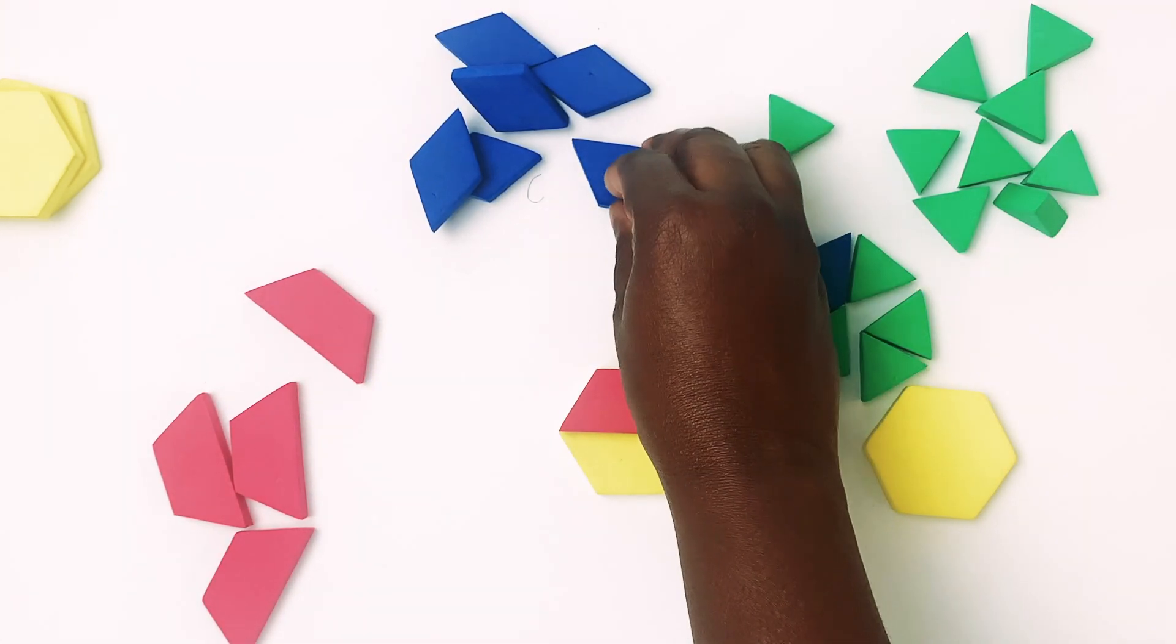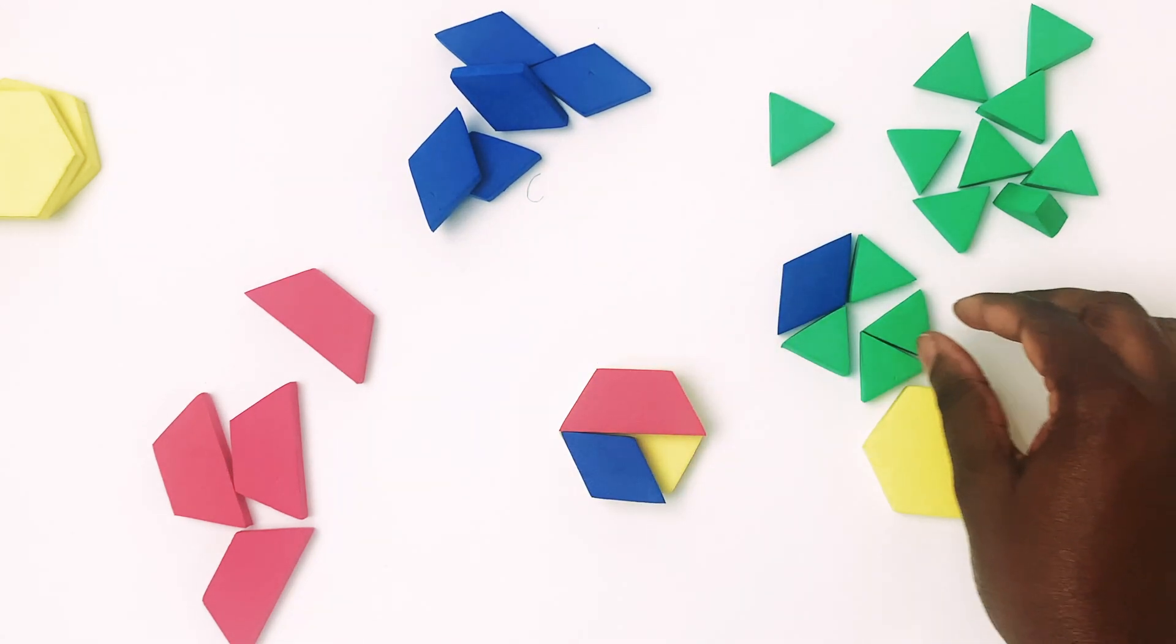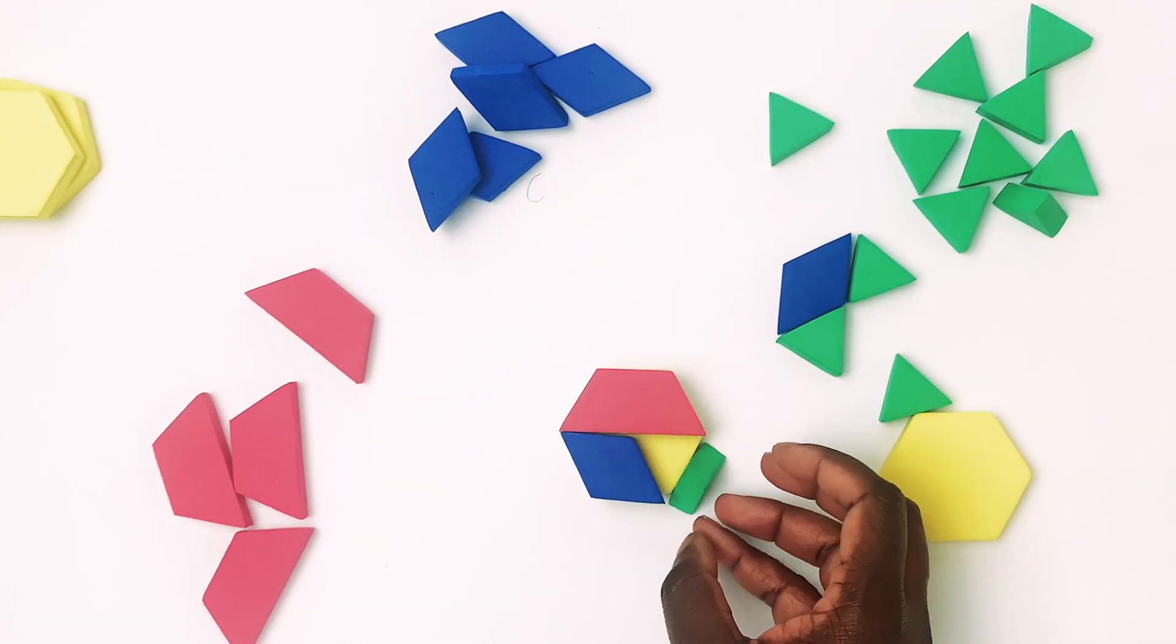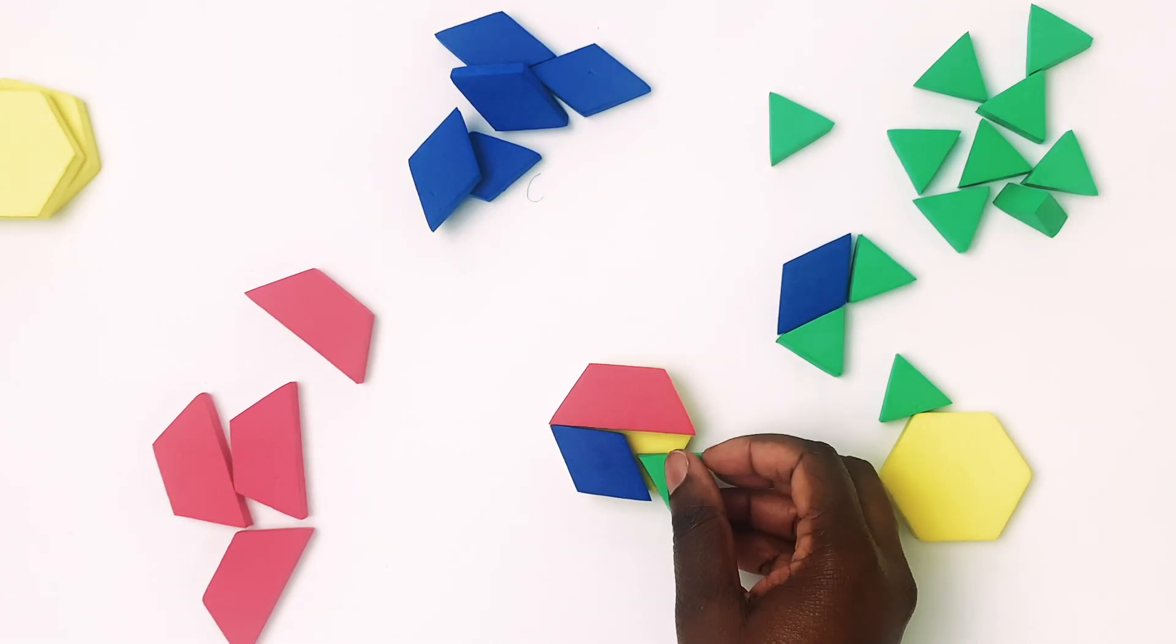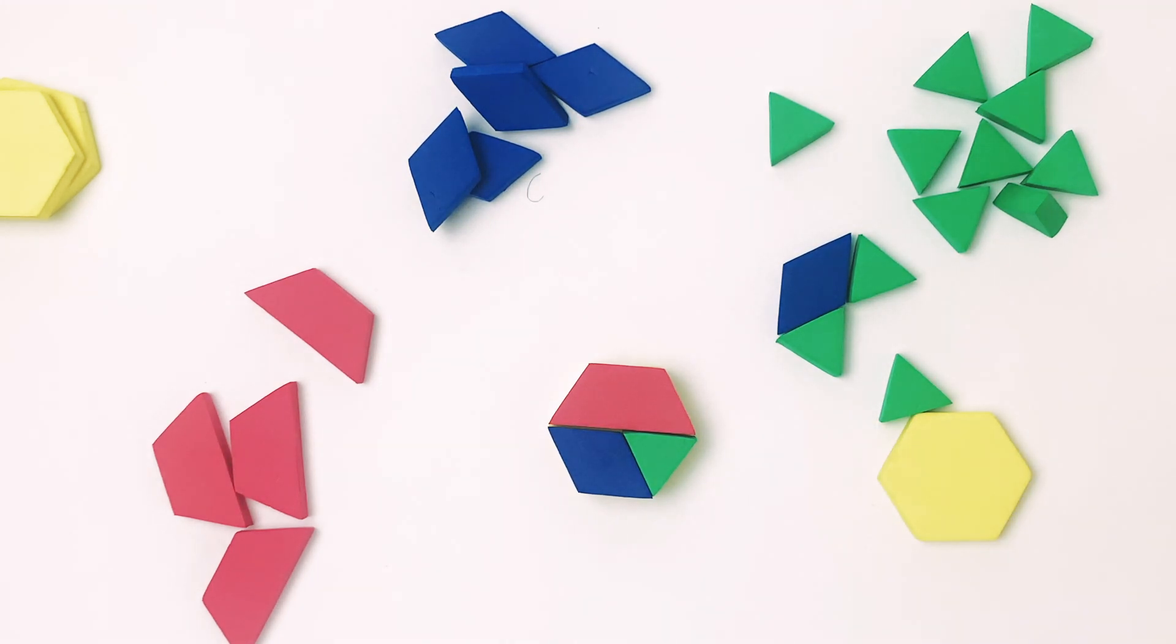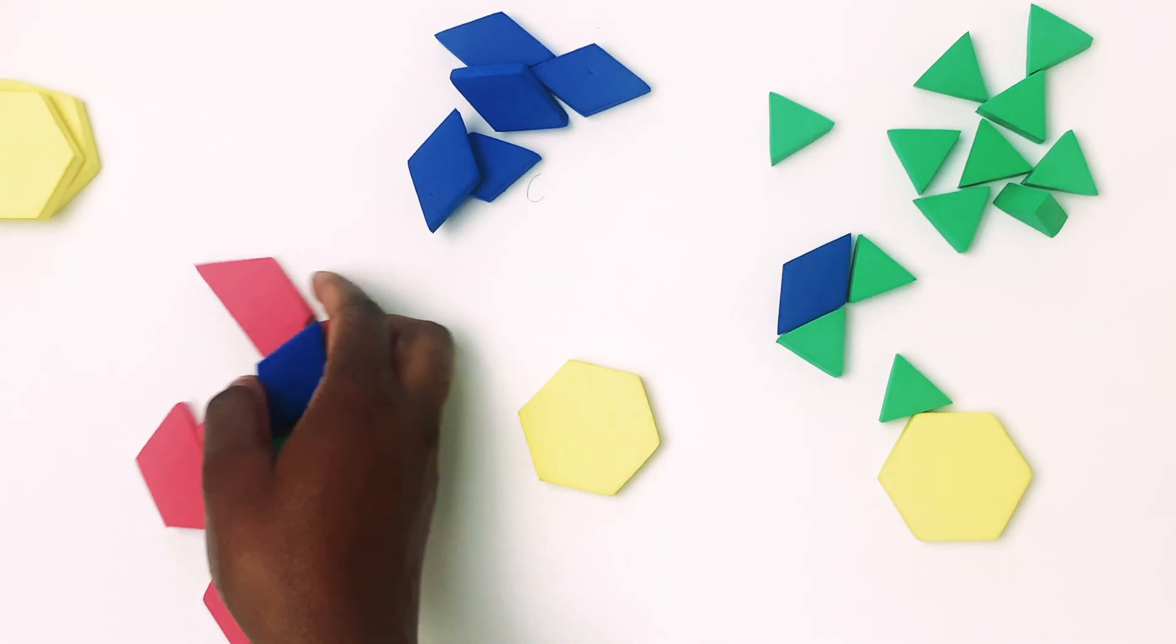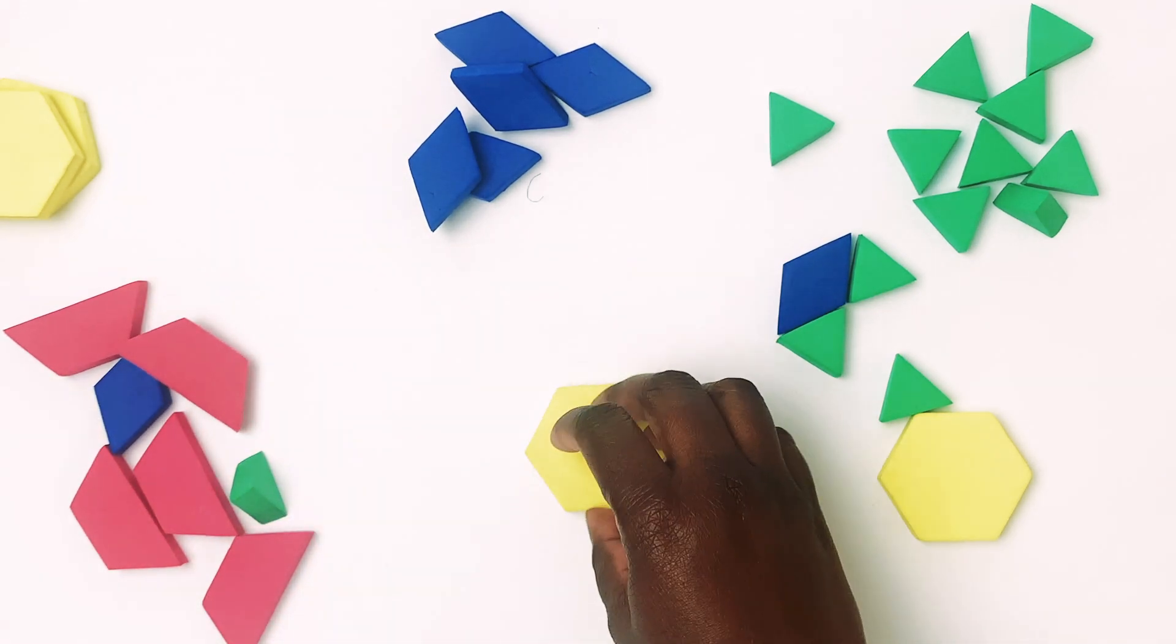Now let's see. Let's use a trapezoid. Okay, and then a rhombus. Oh, look at that. A triangle. So we created a hexagon again using different shapes. Look at that. So cool.